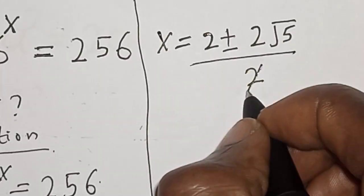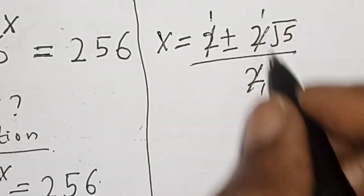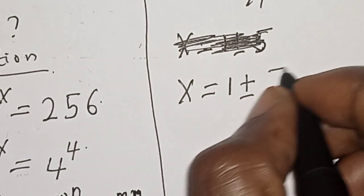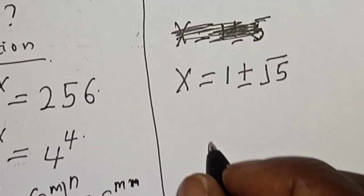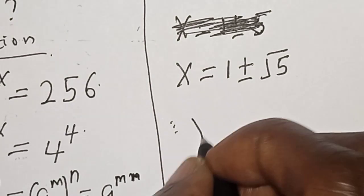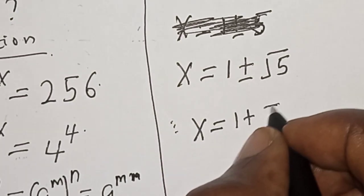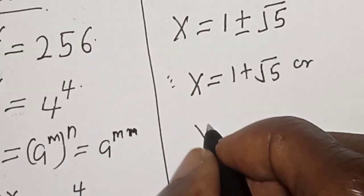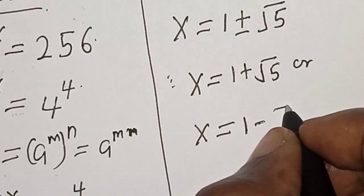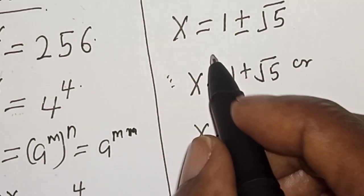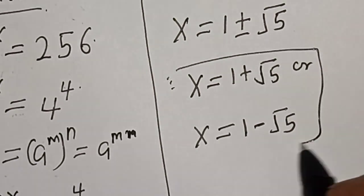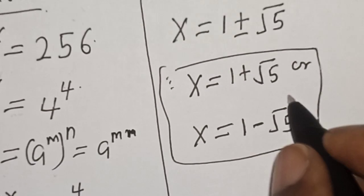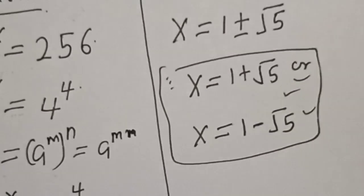Simplifying, s equals 1 plus or minus square root of 5. Therefore s equals 1 plus root 5, or s equals 1 minus root 5. That is our final answer. If you love the class, please like, share, comment and subscribe. Thank you.